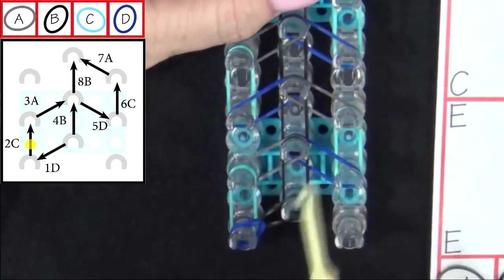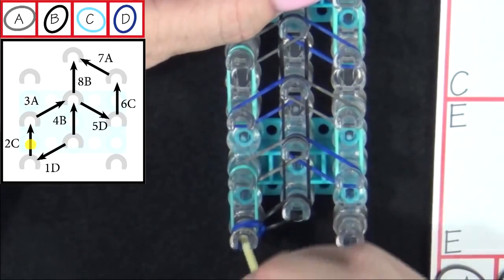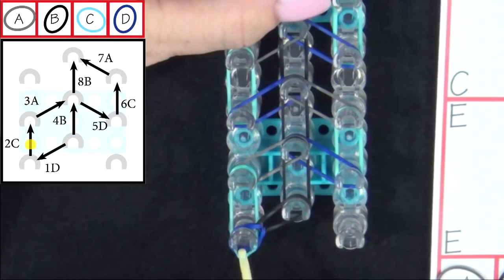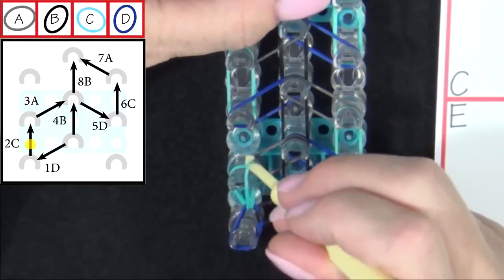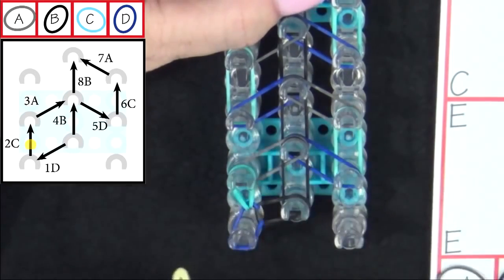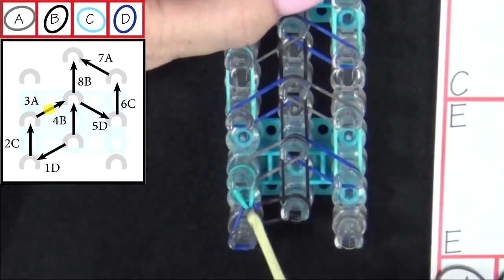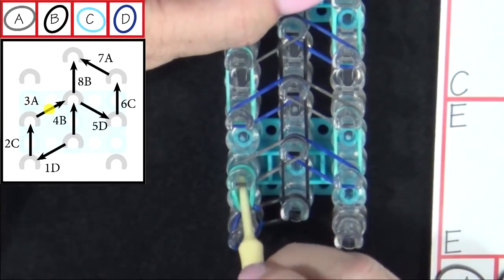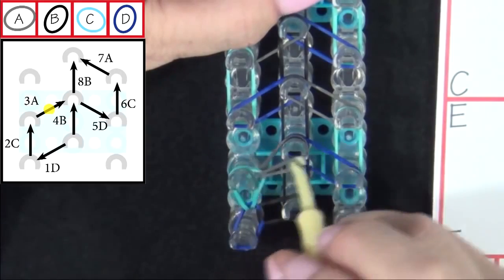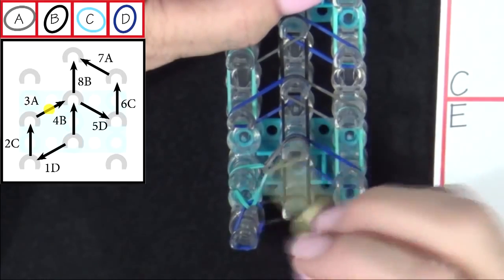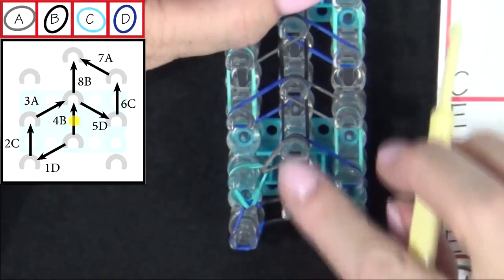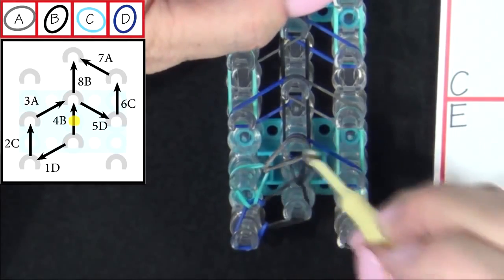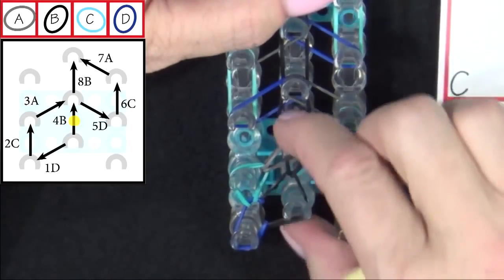Next we'll loop band 2C. Pull the D bands back. Grab the C band with your hook and pull that forward. Next we'll loop band 3A. Reach into the point of this teardrop. Grab your A band and pull it to the center. 4B will be looped forward. You can reach in here, pull back that band, and pull your B band to the center pin.